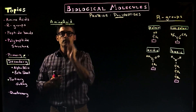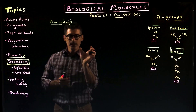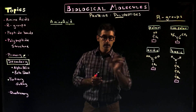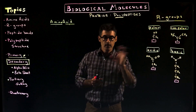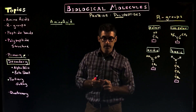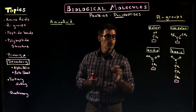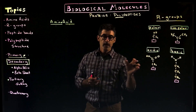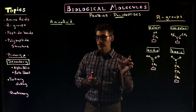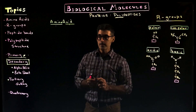These two words — amino and acid — relate specifically to functional groups. The acid part we've already talked about: an acid gives up hydrogen ions to solution. We had a functional group with an acidic property — it was a carboxyl group — and that's going to be part of an amino acid.